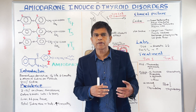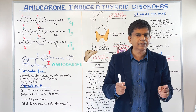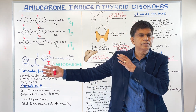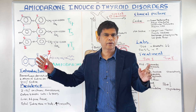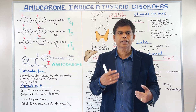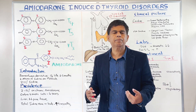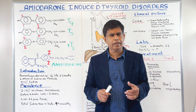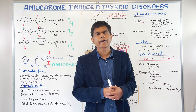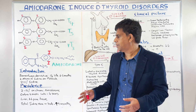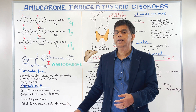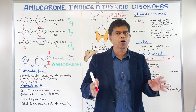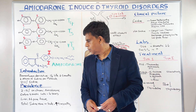Don't get confused — sometimes we think all these things happen when we start the amiodarone, but it's not the case. Most of the time it'll be like four weeks, sometimes like four years. So it's a long latent period. It's not like you started the amiodarone and this happened — it takes a long time to develop. In liver and adipose tissue, that's where it usually gets stored, and total iodine storage in the body can increase up to like nine months.